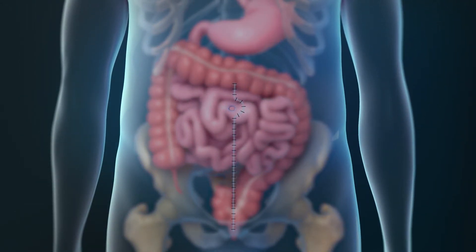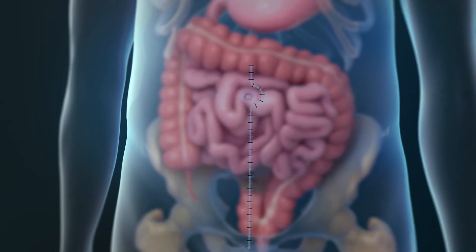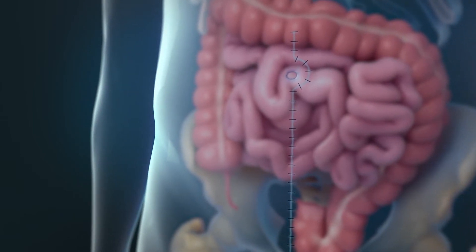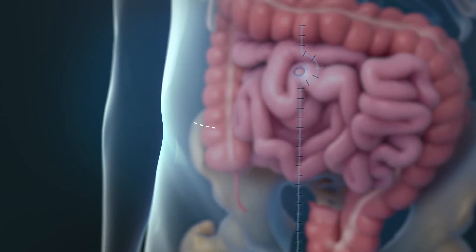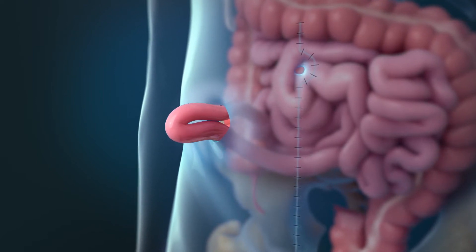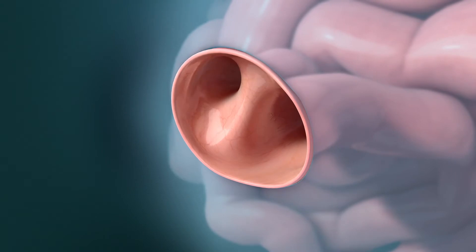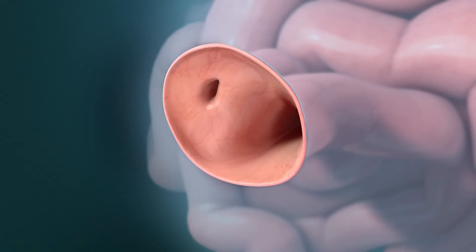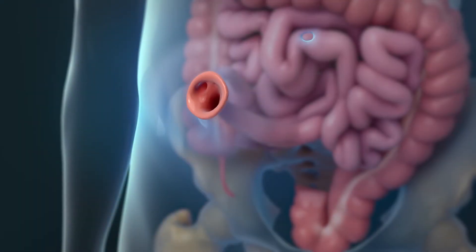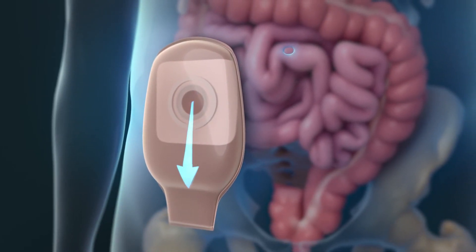At this point, your surgeon will sometimes create a different way for feces to leave your body while the new attachment heals. To do this, your surgeon will make a separate incision in your abdomen and pull a loop of your small intestine through it. The loop will be opened and attached to the incision. The opening is called a stoma. A bag will be attached to the stoma to allow feces to drain into it.